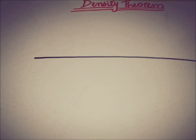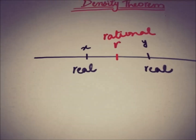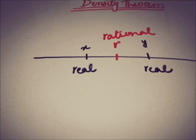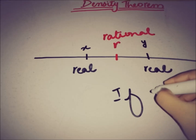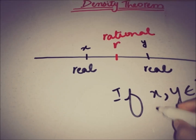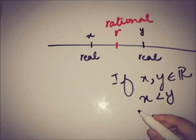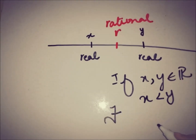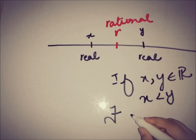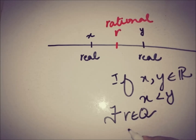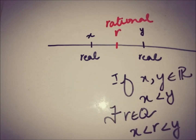The density theorem states that there is always a rational number between two real numbers. The formal statement is: if x and y are two real numbers and x is less than y, then there exists a rational number r such that r is between x and y.